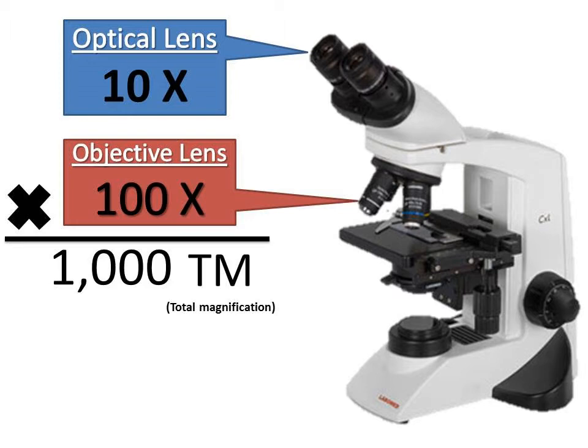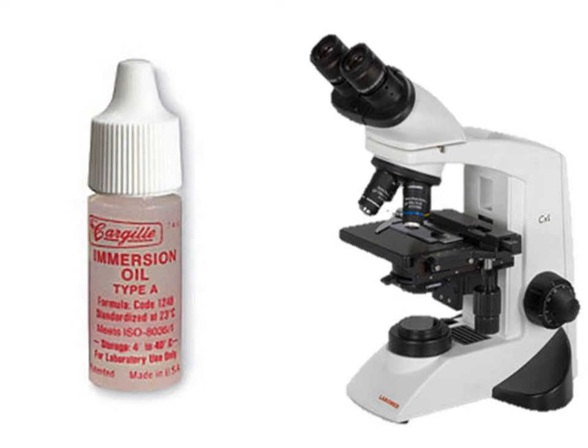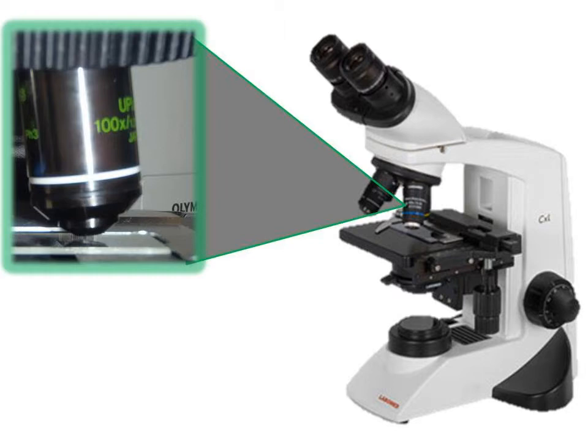This is why the 100 times objective lens needs immersion oil. You can see that the objective lens almost touches the slide, but that small gap is enough to allow light waves to escape. The change in the propagation of light waves as a result of passing through a different medium is called refraction. The immersion oil reduces the amount of refracted light, resulting in a clearer image.